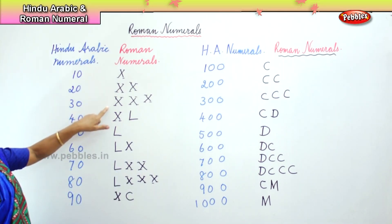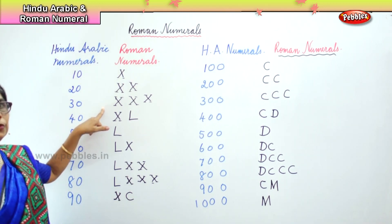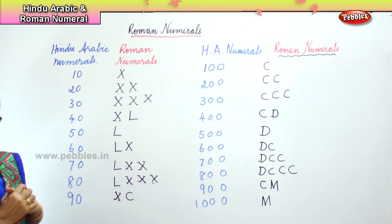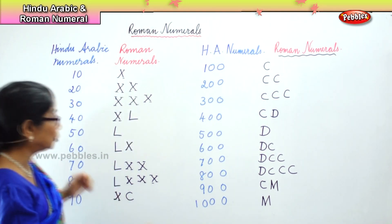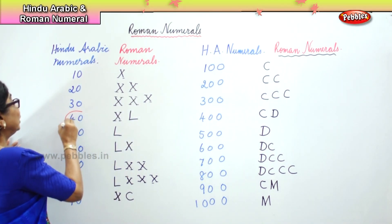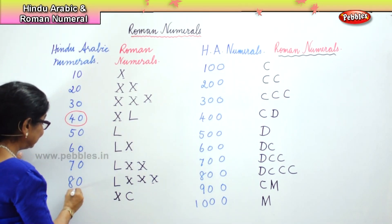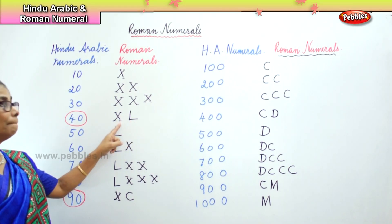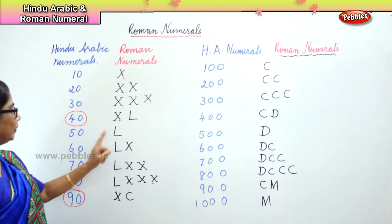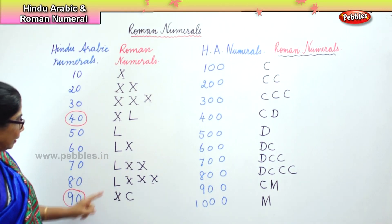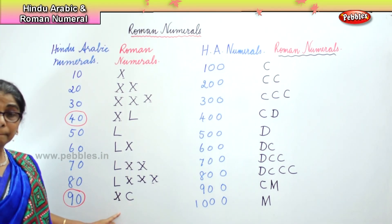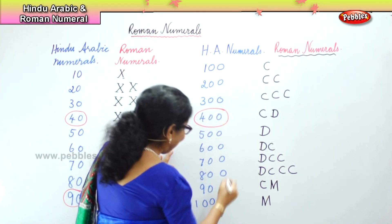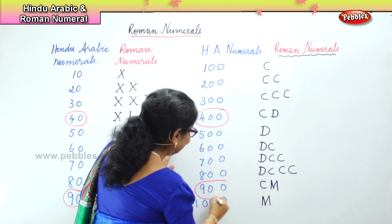10, 20, 30 — 3 times you can repeat. When it comes to 40, there is a change. There is always a change when it comes to 40 and 90. 50 minus 10 is 40. Then 50, 60, 70, 80. Here 100 minus 10 is 90. Again, when it comes to 400 and 900, there is a change.